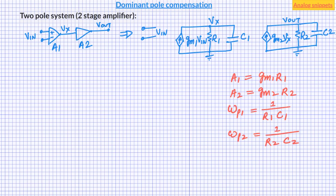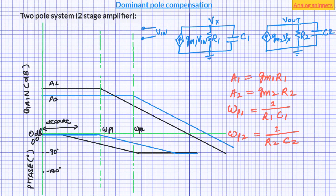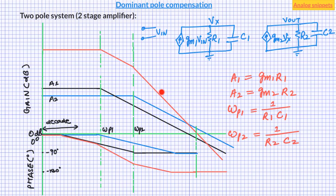Let's assume that the gain and bandwidth of these two stages are of the same order of magnitude. Let's now draw the Bode plot of these two stages individually. We have the gain plot on the top and the phase plot on the bottom. Here we assume the first stage to have a slightly higher gain and the second stage to have a slightly higher bandwidth, which is quite typical in amplifier design. Recall that the gain-bandwidth product will be constant along the roll-off line. Using the Bode plot of individual gain stages, we can now draw the Bode plot of the total amplifier. This red line indicates the Bode plot of the magnitude of the total gain and this other red line indicates the Bode plot of the phase of the total gain.